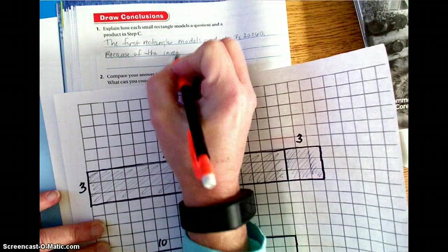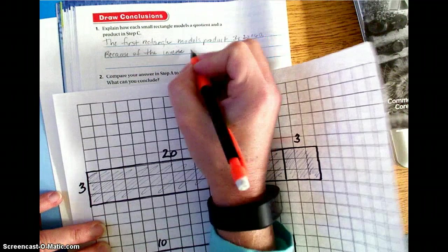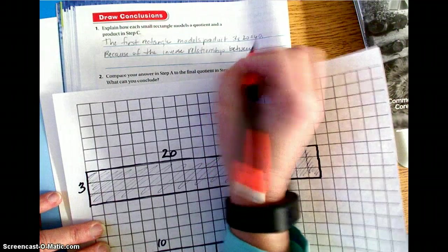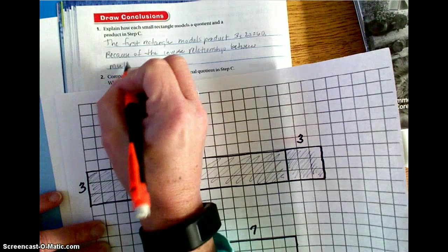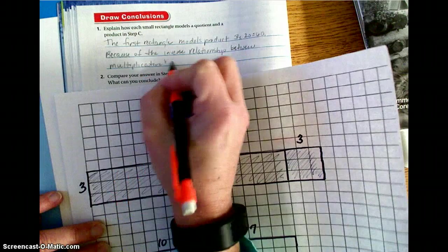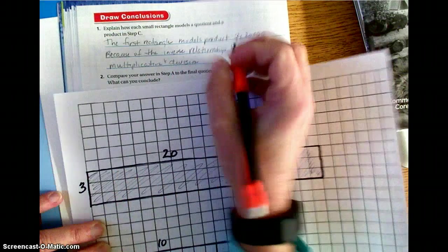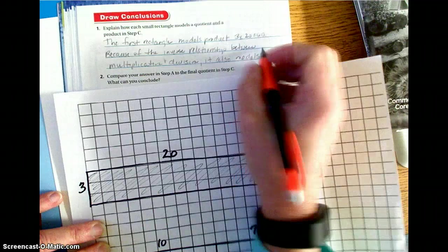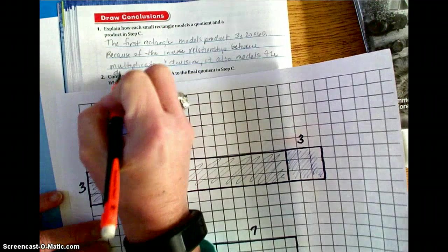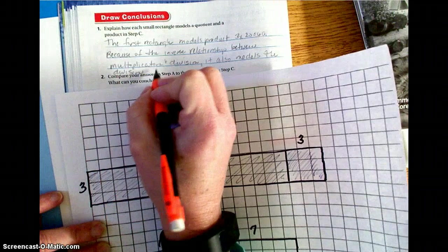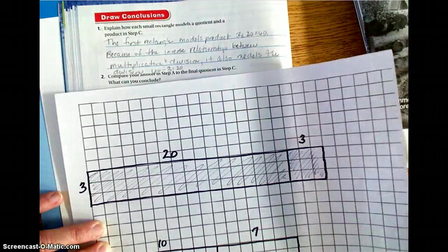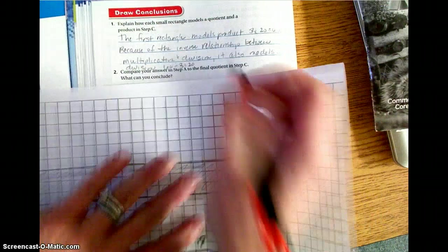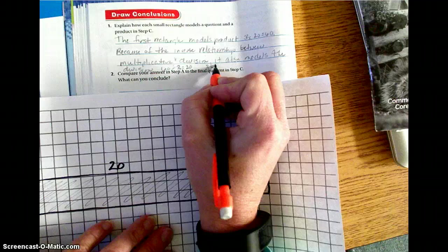Because of the inverse relationship, inverse relationship, inverse means opposite, inverse relationship between multiplication and division, it also models the division 60 divided by 3 equals 20. So basically, we're just working in opposite directions. Then, if we look at the smaller rectangle, it models 3 times 3 equals 9.